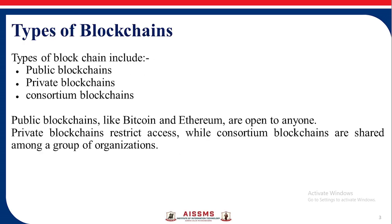Types of blockchains include public blockchains, private blockchains, and consortium blockchains. Public blockchains like Bitcoin and Ethereum are open to anyone. Private blockchains restrict access, whilst consortium blockchains are shared among a group of organizations.